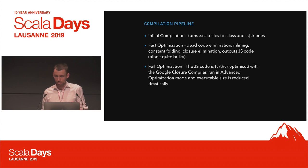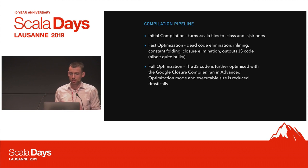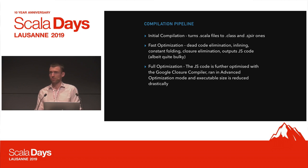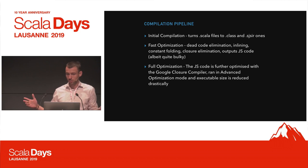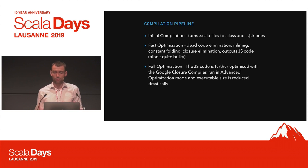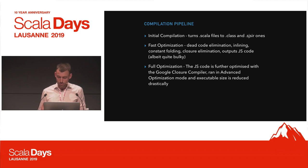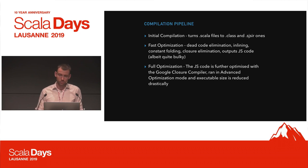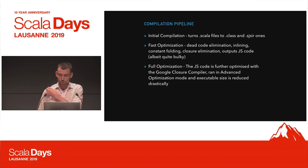What is the compilation pipeline from a bird's eye view? You have the initial compilation that turns your Scala files to .class and the Scala.js intermediate representation. Then you can do a fast optimization — which does dead code elimination, inlining, and reduces output size quite significantly — or you can do full optimization, which runs the Google Closure Compiler on top of it in advanced optimization mode, producing even smaller executables.